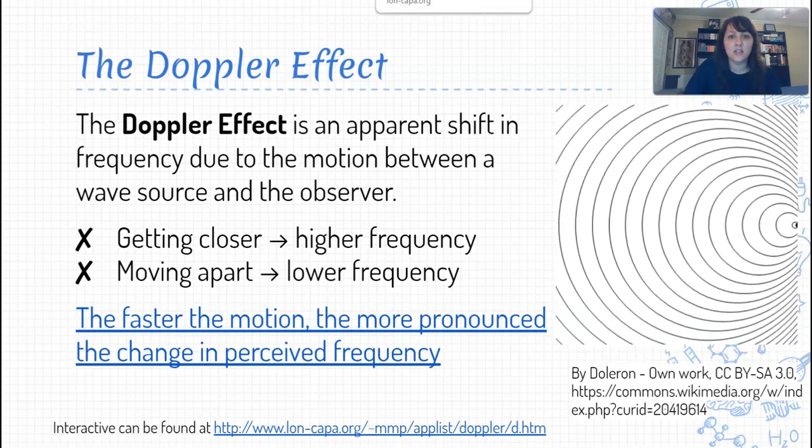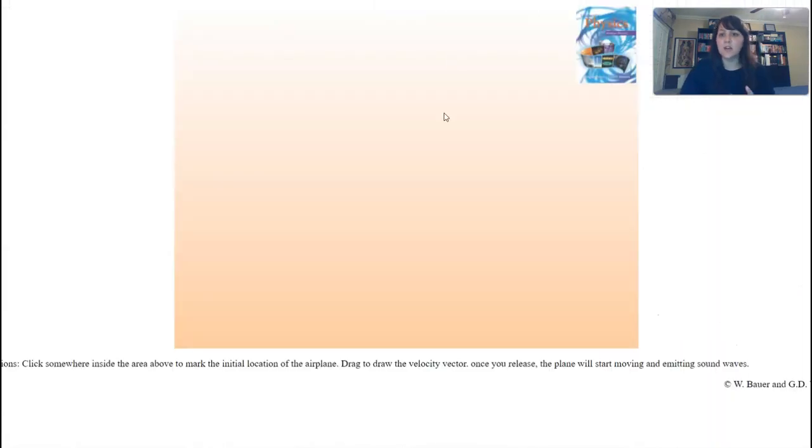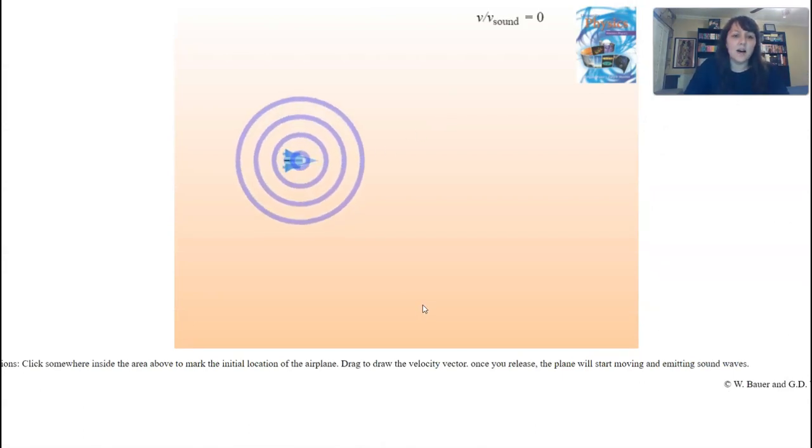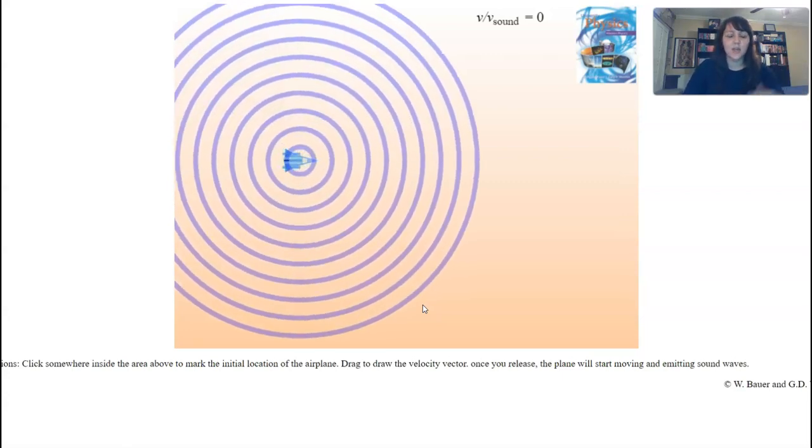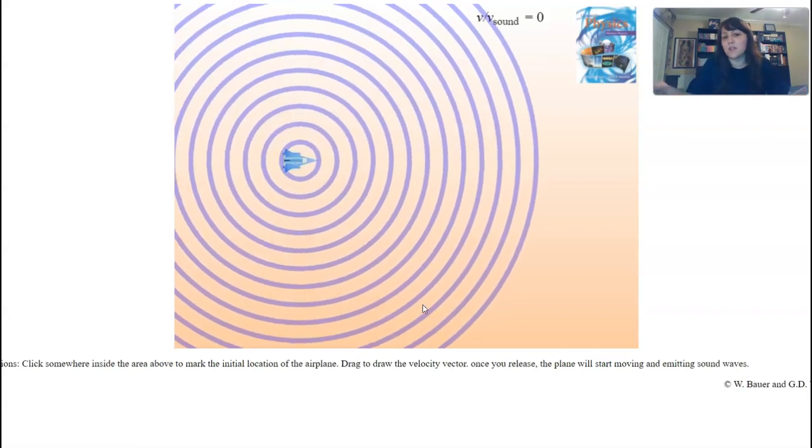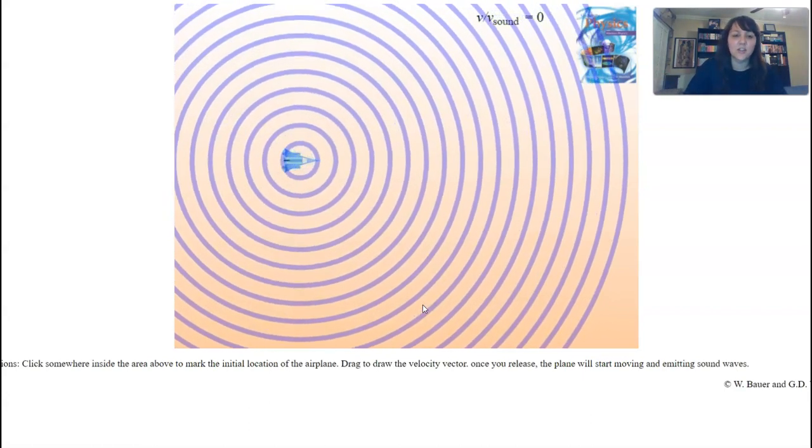So, just to kind of give us a chance to play with that a little bit, we've got another little simulation right here with airplanes producing sound. All right. And so, we'll start off with just like a regular, like it's just sitting there. It's a stationary plane. It is producing these sound waves. They're emanating out as wave fronts. No big change. That's not very exciting.